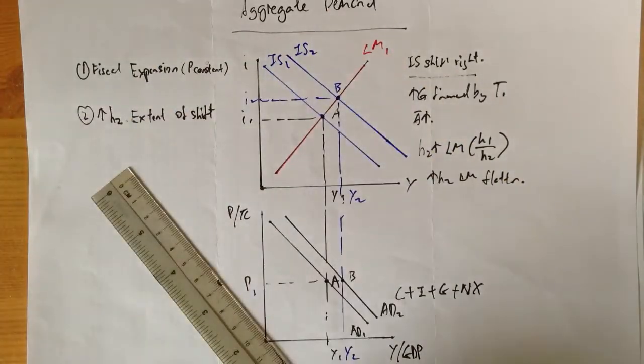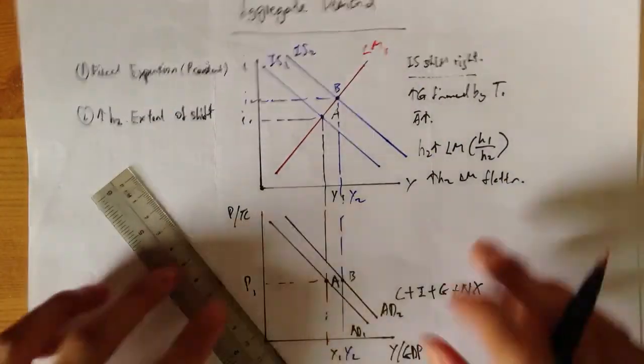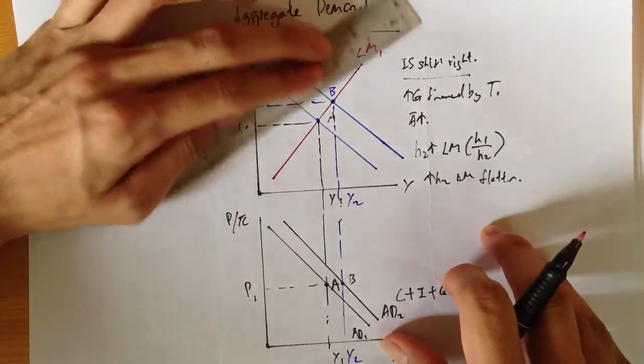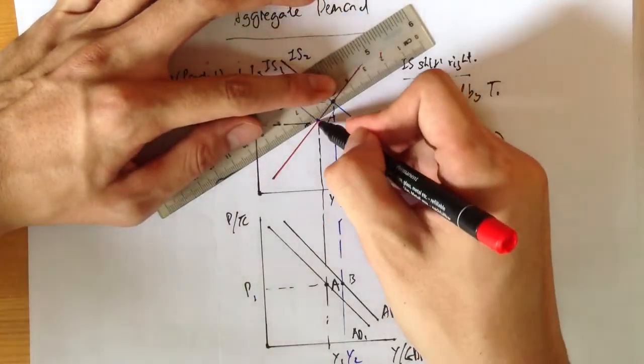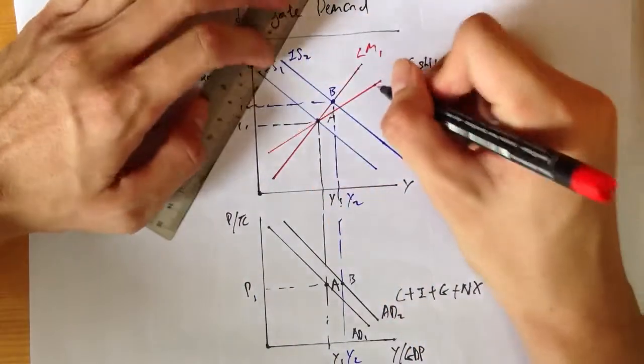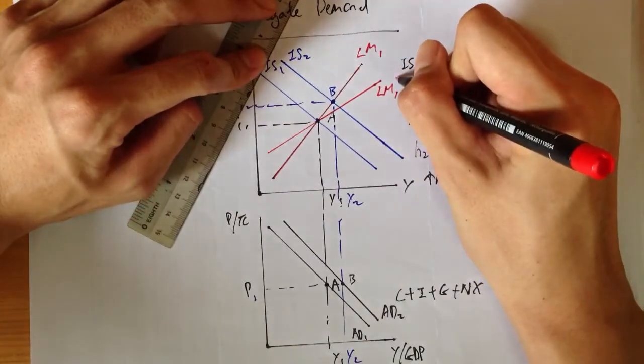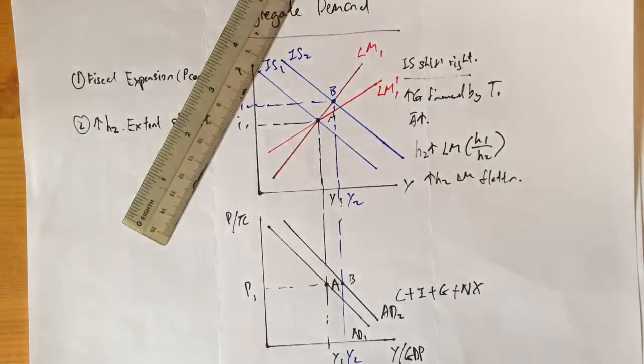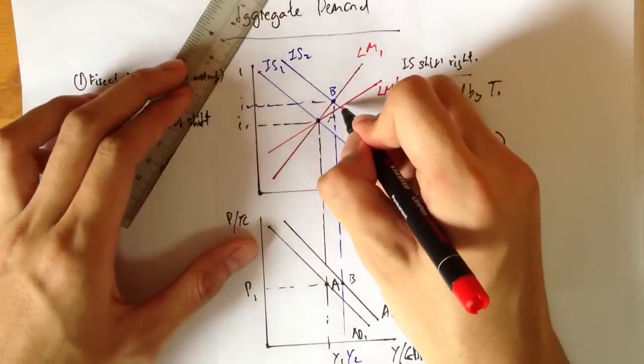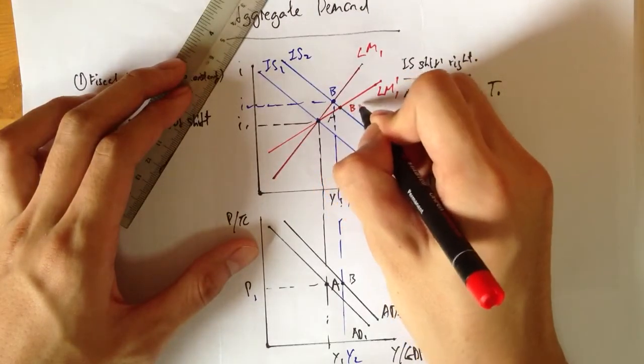In this case, I'm going to draw a flatter LM. Everything stays the same. So under a fiscal expansion, you're going to have a new point.